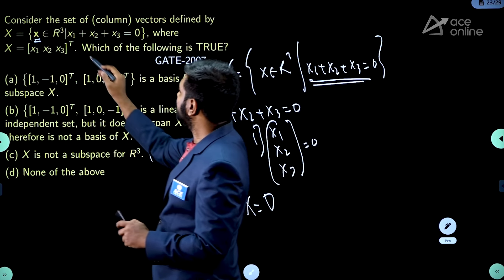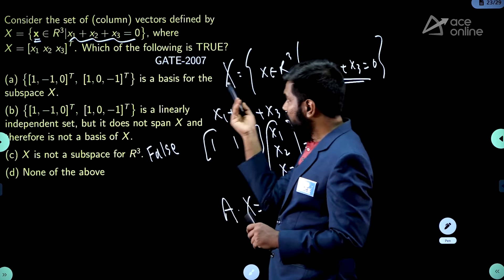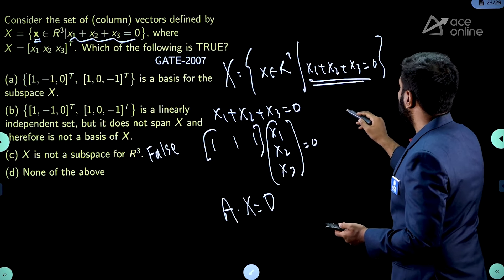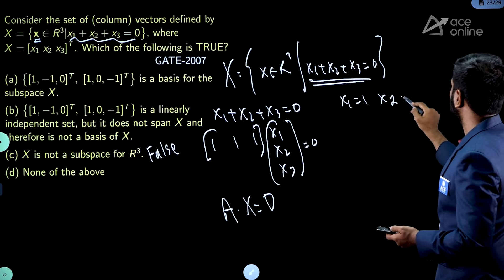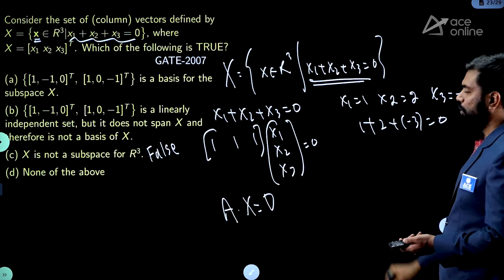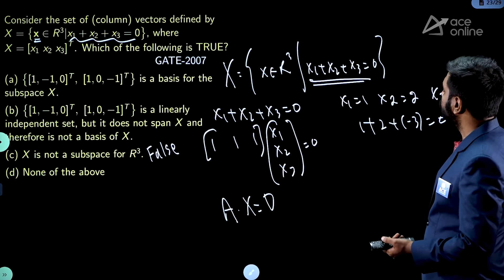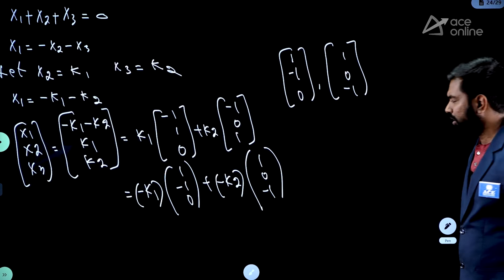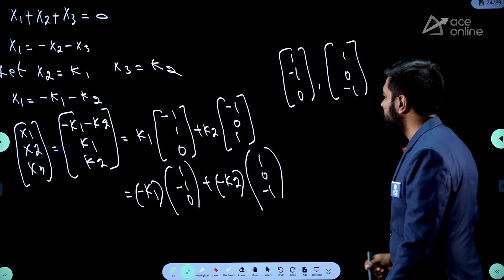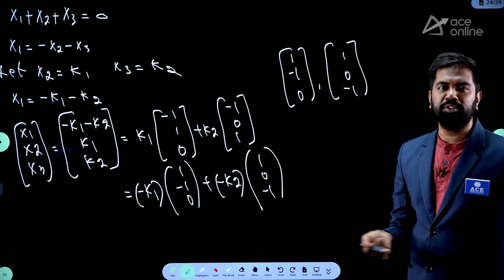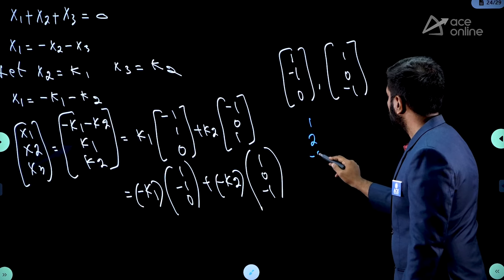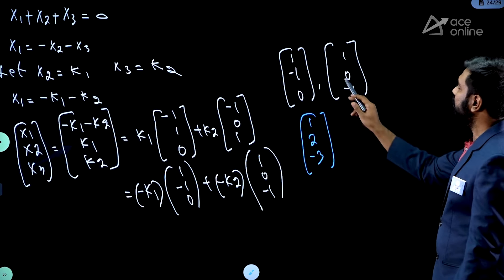For example, take any solution: let x₁=1, x₂=2, then x₃=−3 (since 1+2−3=0). Can you get (1,2,−3) as a linear combination of (1,−1,0) and (1,0,−1)? Try −2·(1,−1,0) + 3·(1,0,−1): first component: −2+3=1 ✓, second: −2·(−1)+3·0=2 ✓, third: −2·0+3·(−1)=−3 ✓. The linear combination gives us this solution.